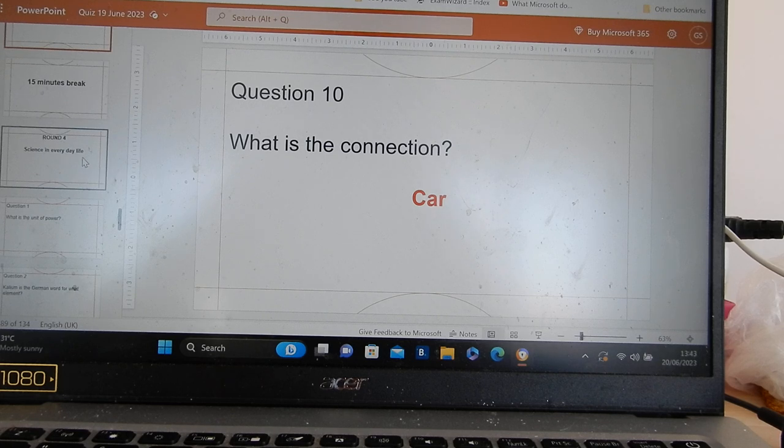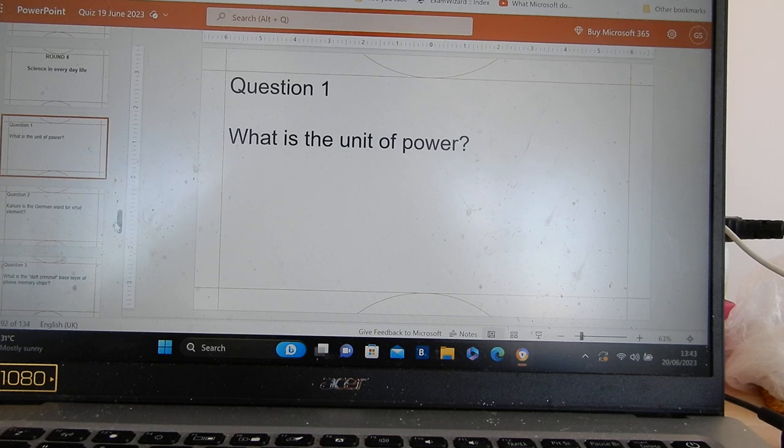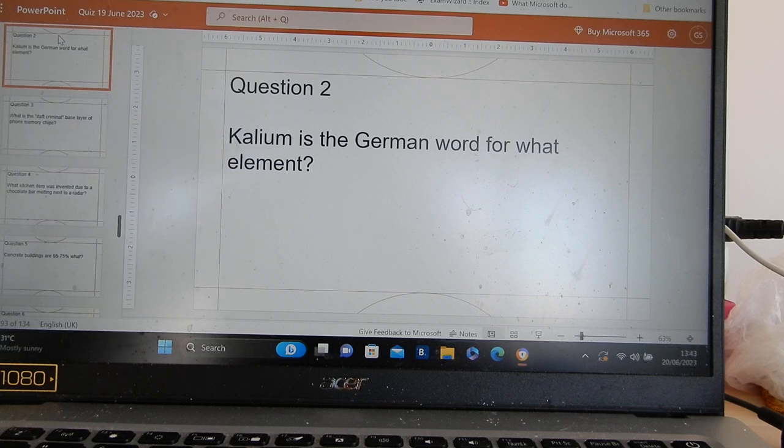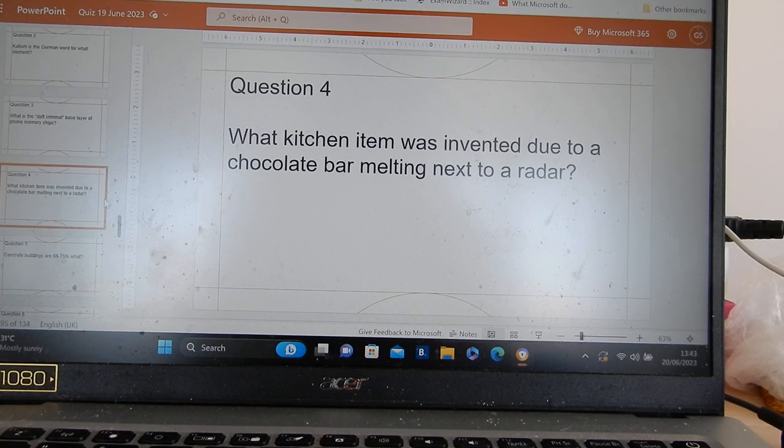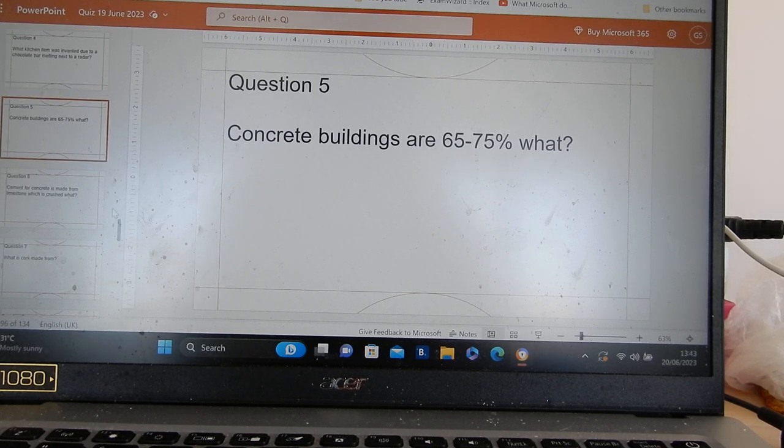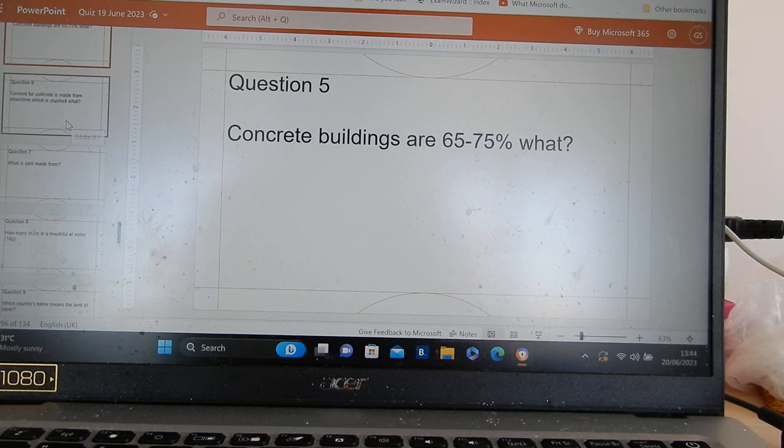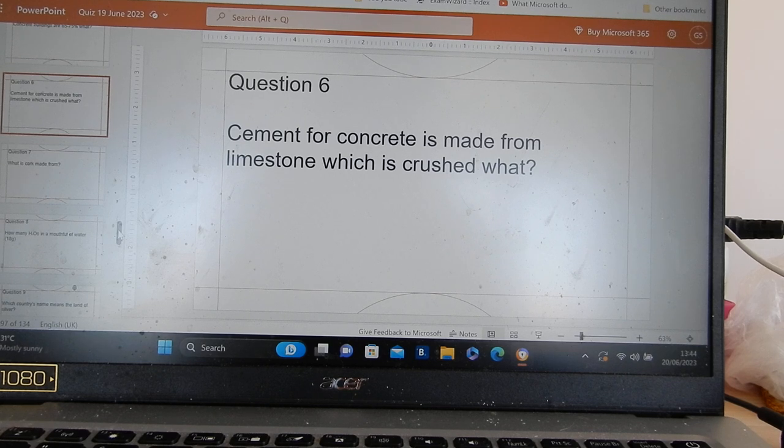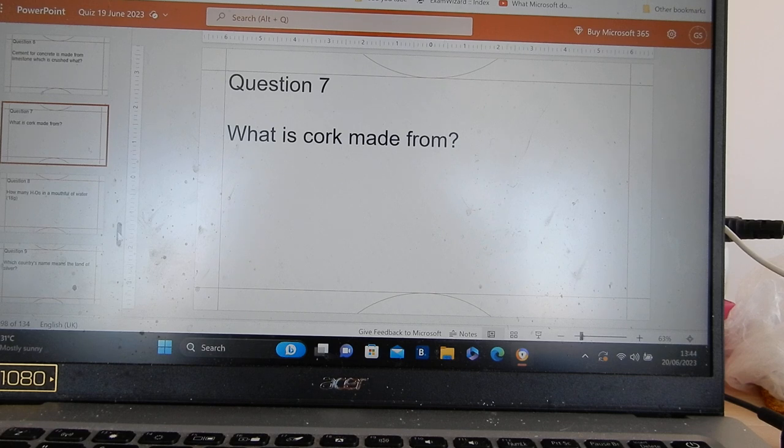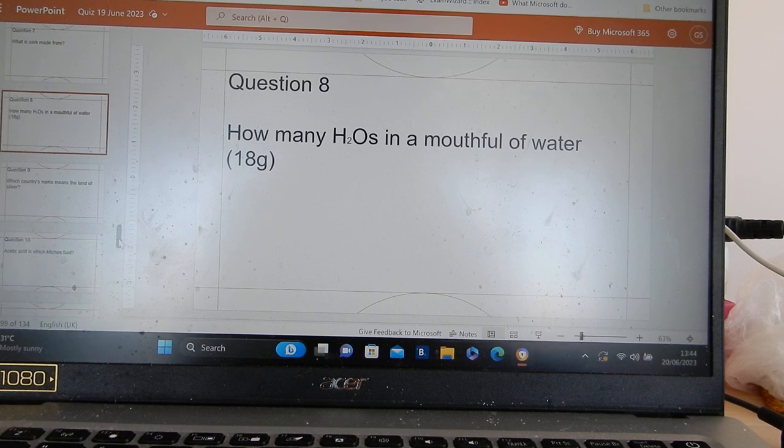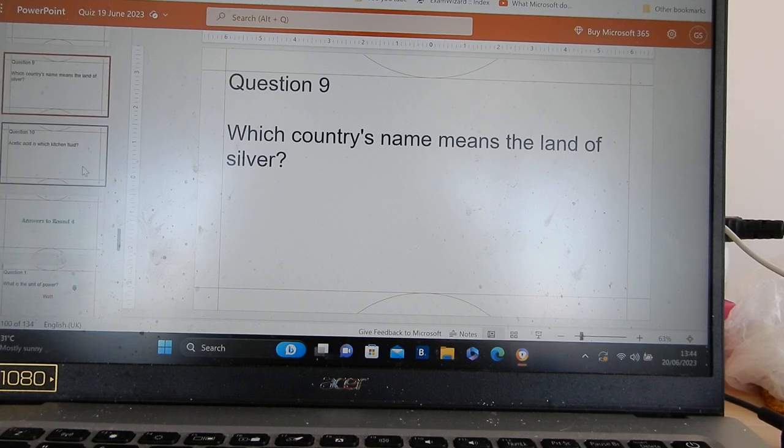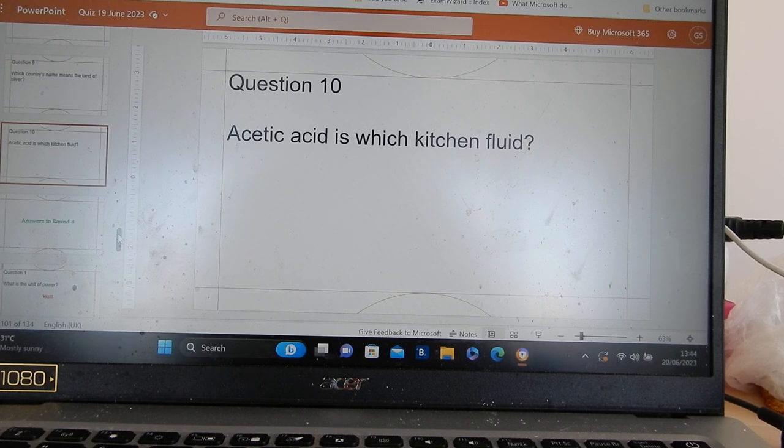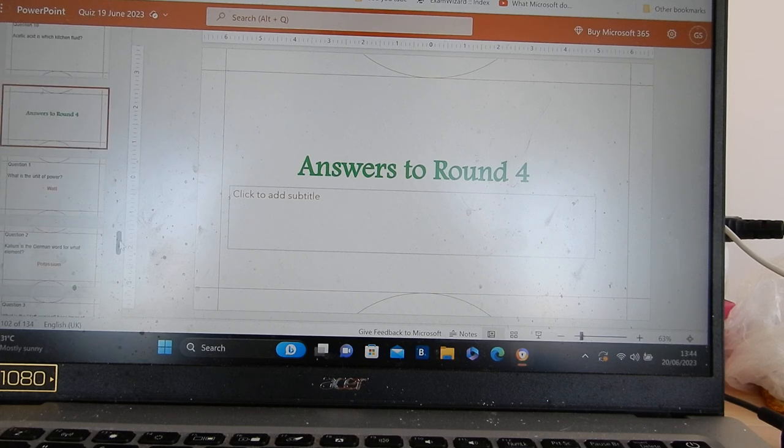Round four, science in everyday life. What is the unit of power? Kalium is the German word for what element? What is the daft criminal base layer of phone memory chips? What kitchen item was invented due to a chocolate bar melting next to a radar? Concrete buildings are 65 to 75 percent what? Yeah, what is your home really made of? Cement for concrete is made from limestone which is crushed. What cork is made from? How many H2O's, how many molecules in a mouthful of water, 18 grams? What country's name means the land of silver? My students will recognize that one. Acetic acid is which kitchen fluid?